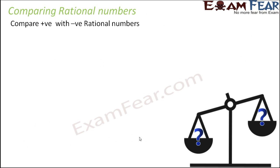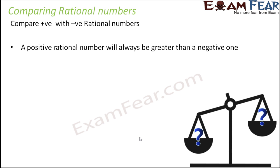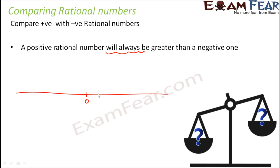Now let's compare a positive rational number with a negative rational number. This is the simplest scenario: a positive rational number will always be greater than a negative one, and this holds true always — it doesn't matter what the values are. On the number line, all negative numbers are located to the left of all positive numbers, and as we move left the value decreases. So all negative numbers are always smaller than positive numbers.